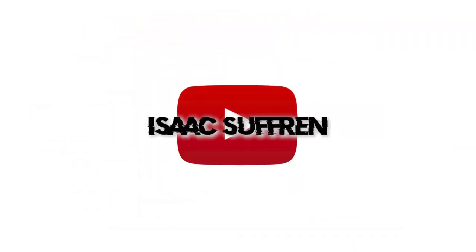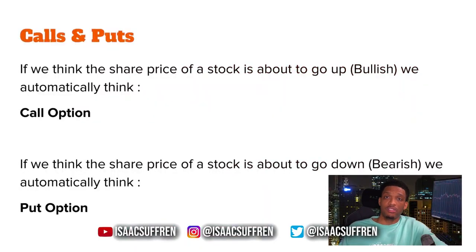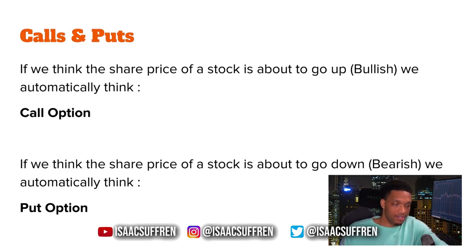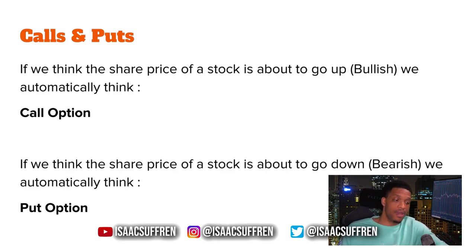Welcome back to another video. We're going to go over the basics of options. First things first, there are two types of options: there's calls and there's puts. If we think the share price of a stock is about to go up, or what they call bullish, we automatically think call option. If we think the share price is about to go down, or what they call bearish, we automatically think put option.